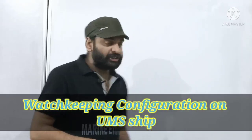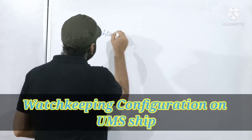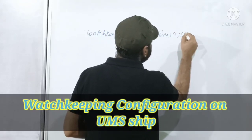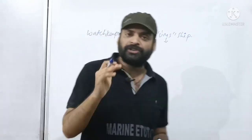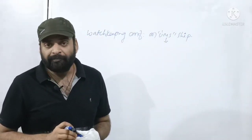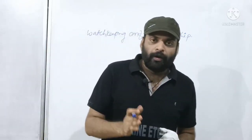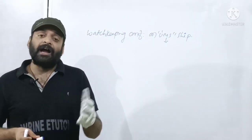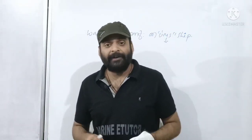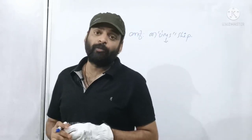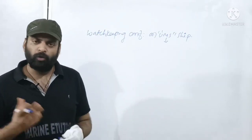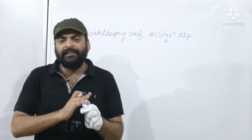Now the next topic is watchkeeping configurations on UMS ships. UMS again stands for Unattended Machinery Space. As I mentioned at the start of the lecture, the engine crew differs slightly between UMS and traditionally manned vessels. In traditionally manned vessels, two to three motormen are required. But in UMS ships, only one motorman is sufficient.